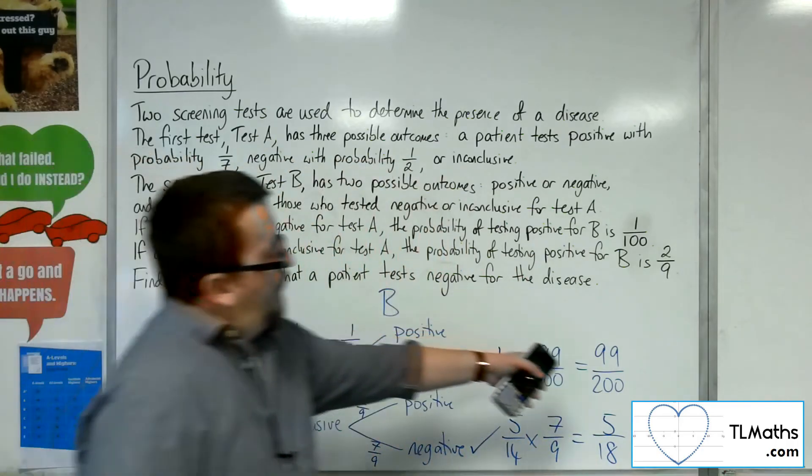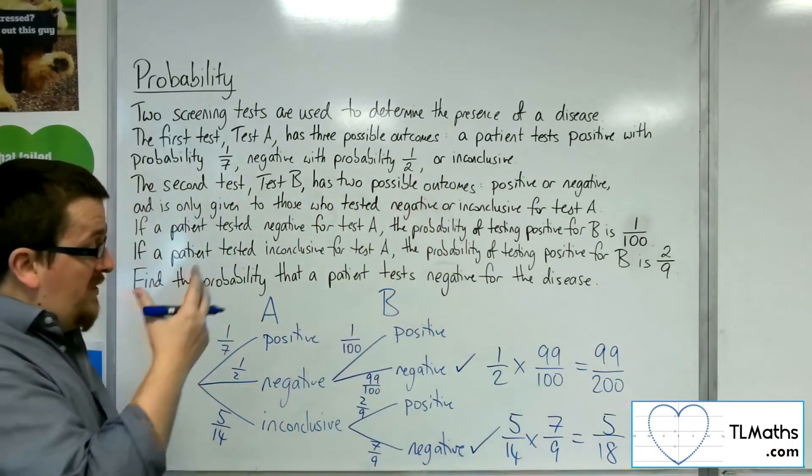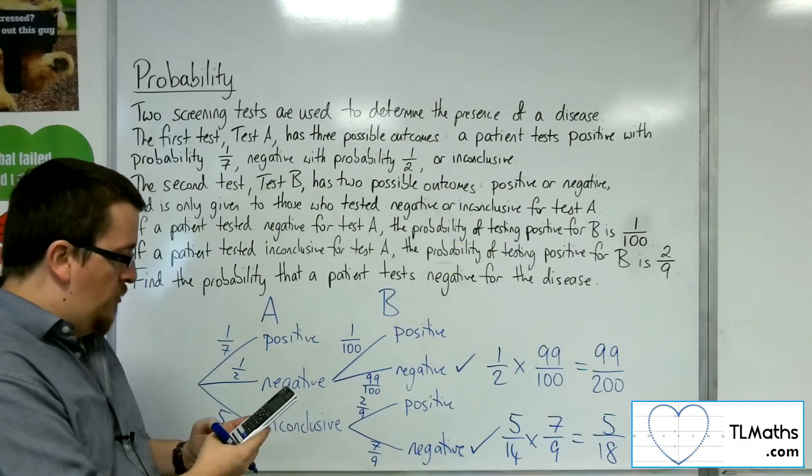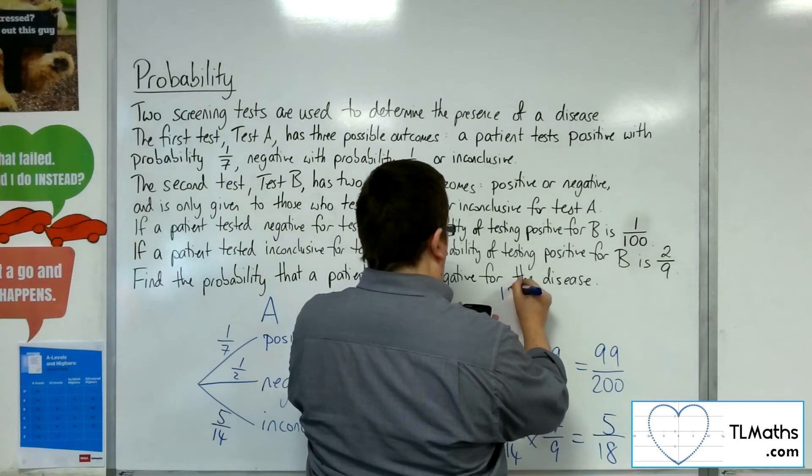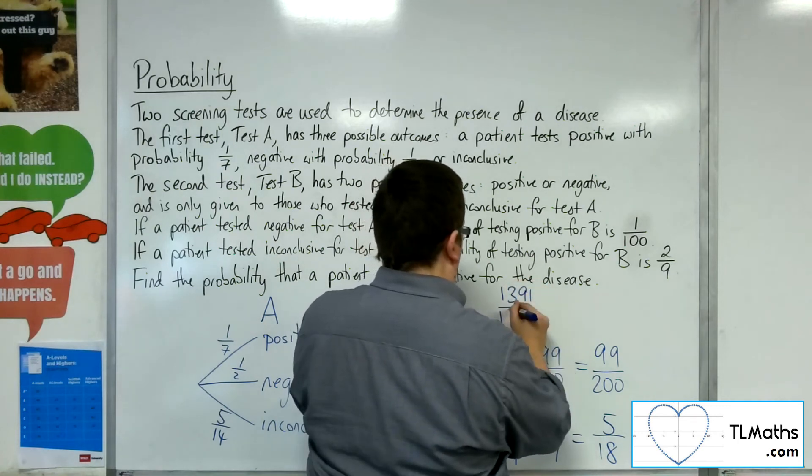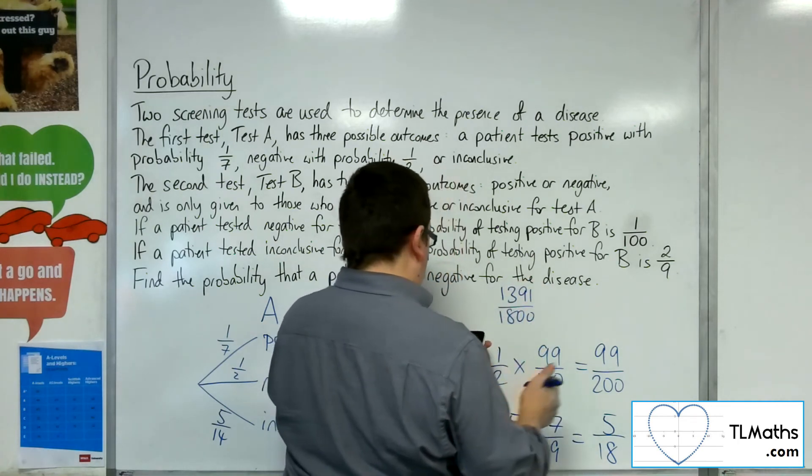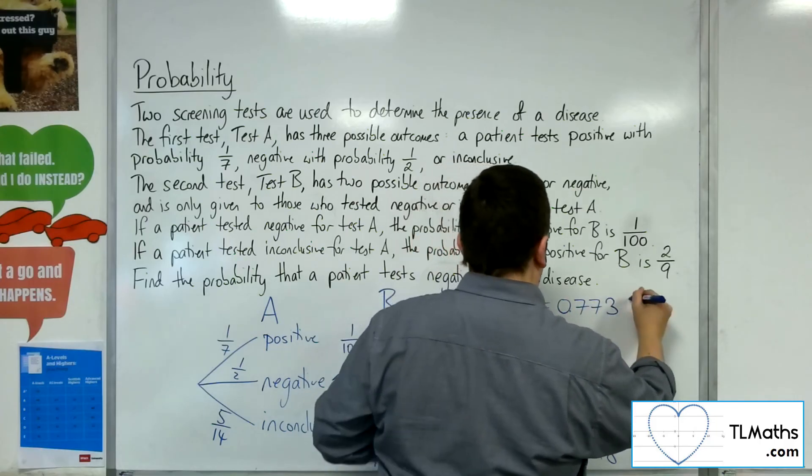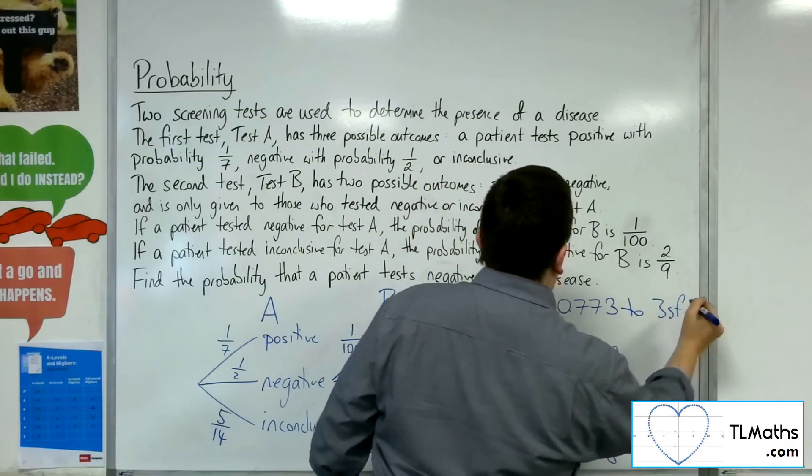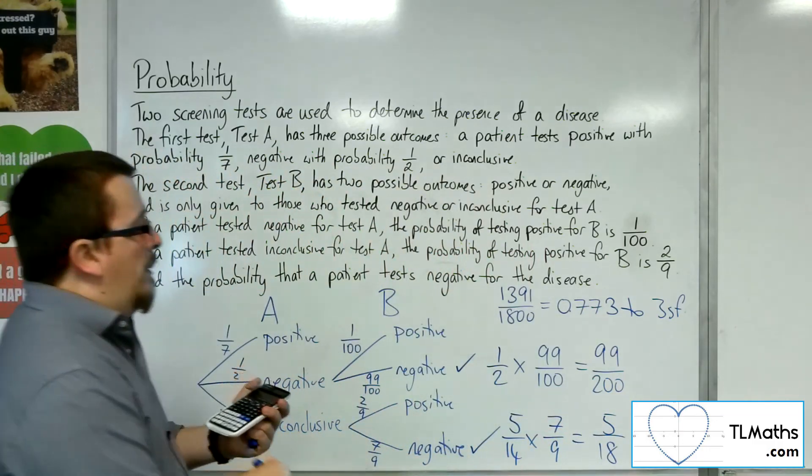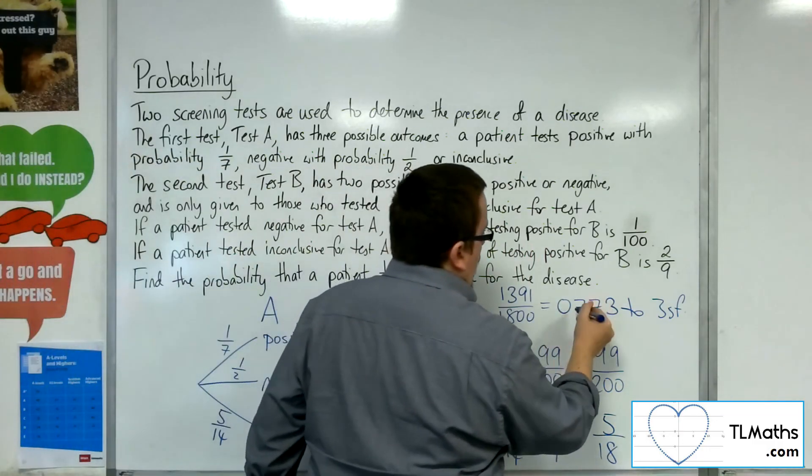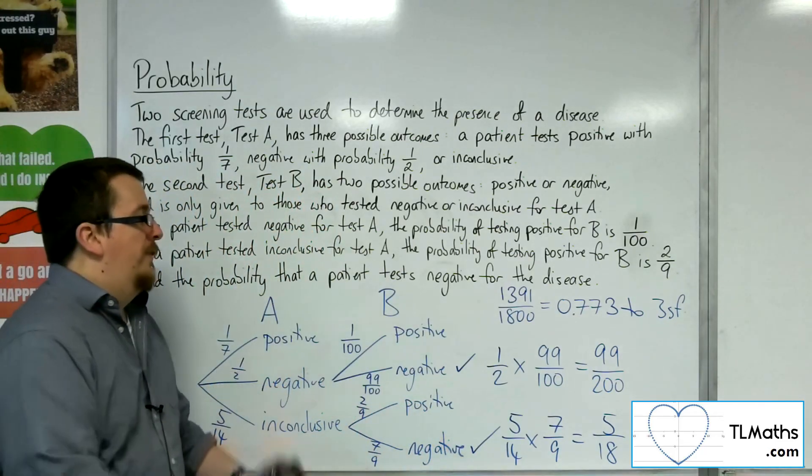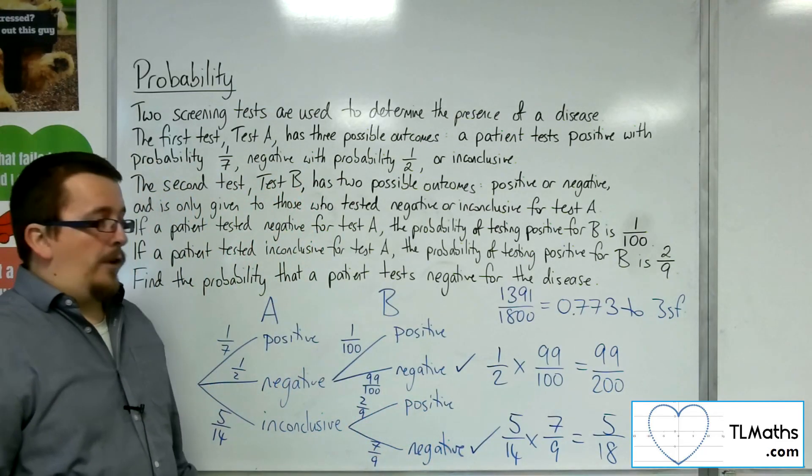So, it's the sum of those two probabilities, the two routes through. So, five-eighteenths plus ninety-nine over two-hundred. And so, that gets us one-three-nine-one over eighteen-hundred, which is equal to 0.773 to three significant figures. So, that's the probability that someone will test negative for the disease using those two tests.